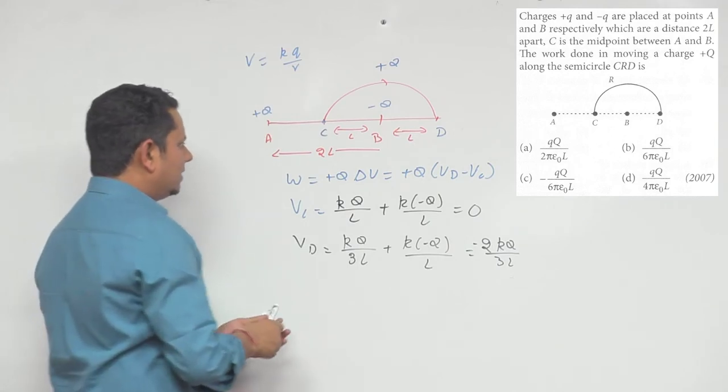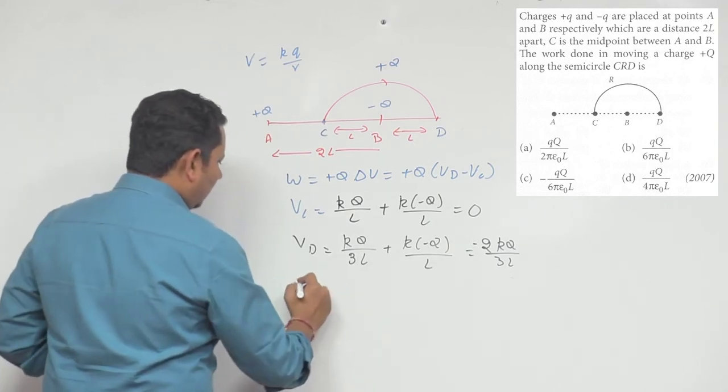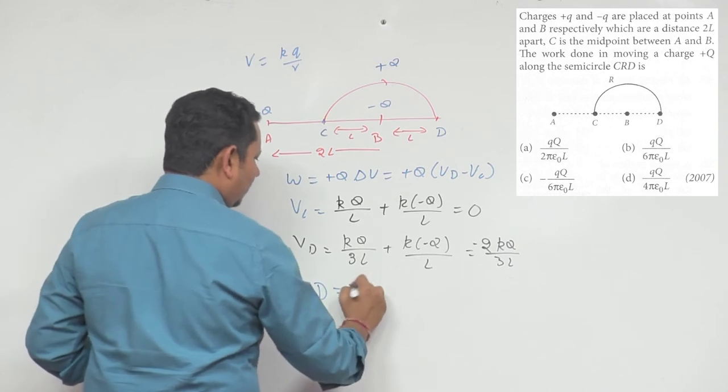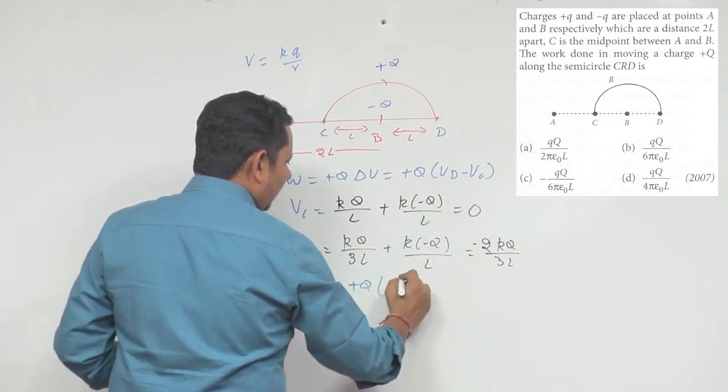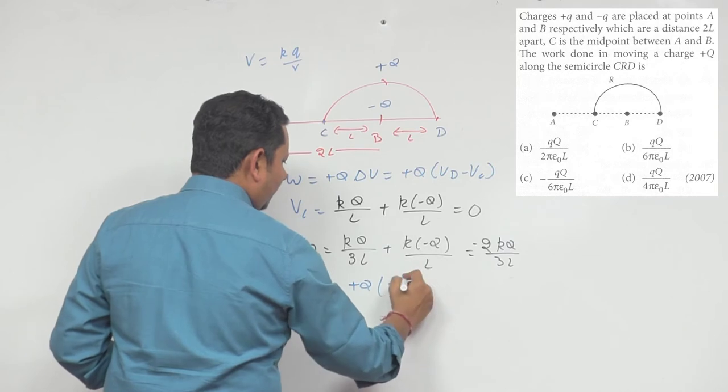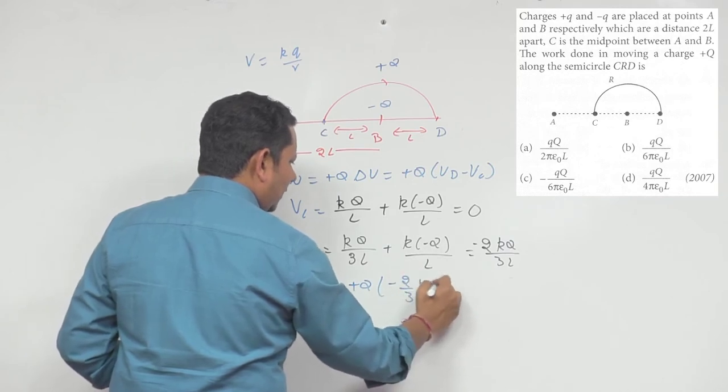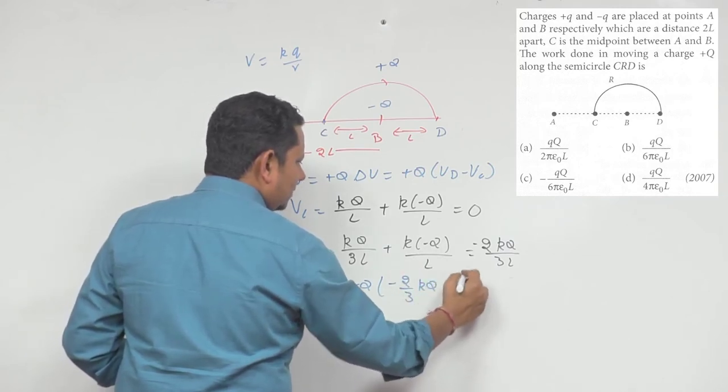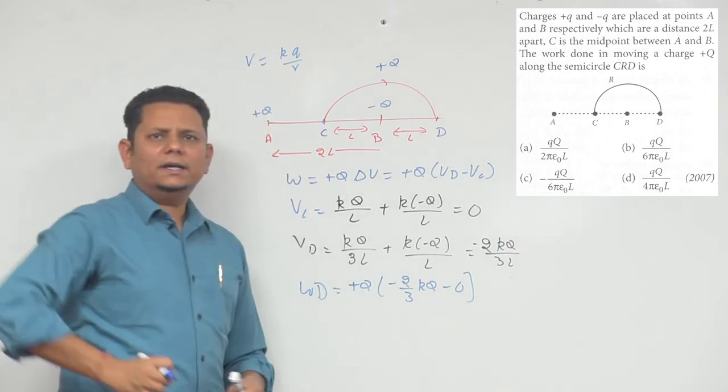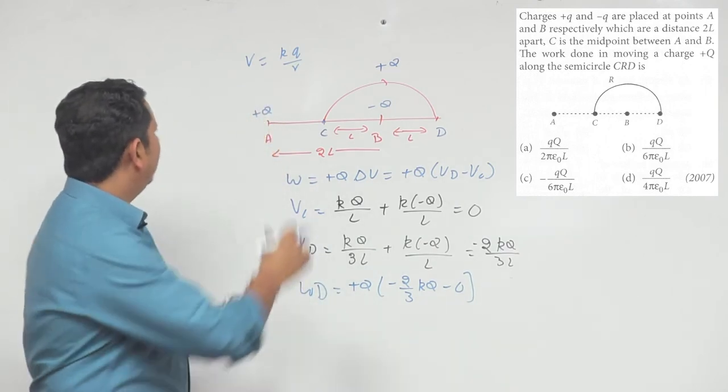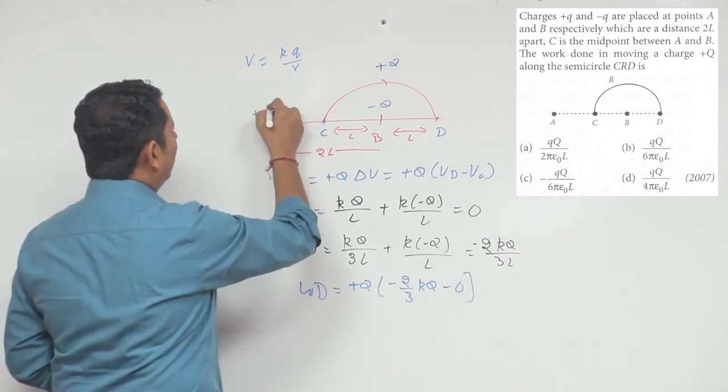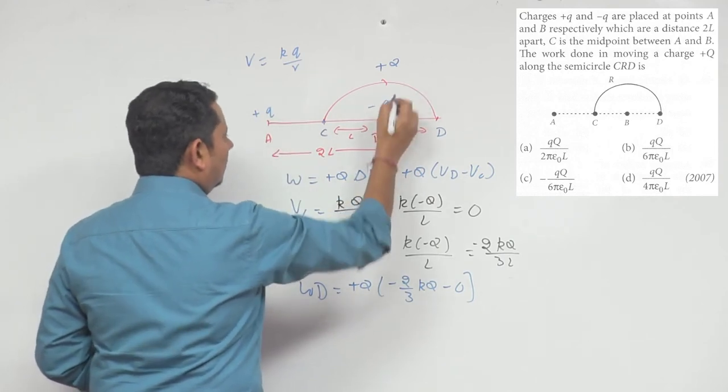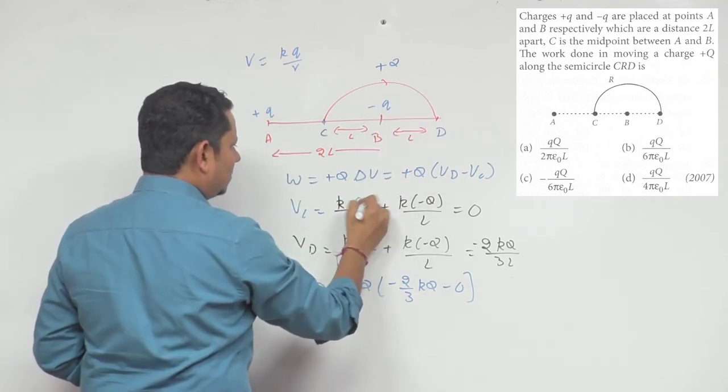Now you can simply write the work done. So our work done will be equal to +Q, and you will multiply it by VD, that is minus 2/3 KQ minus 0. So when we put the value here, the charge here is +Q and -Q small q.